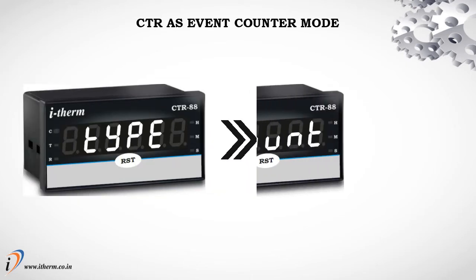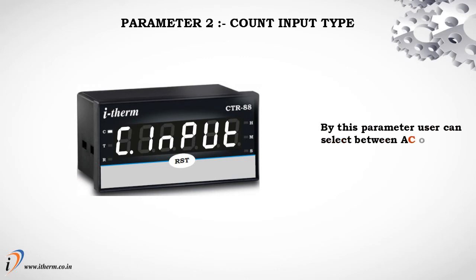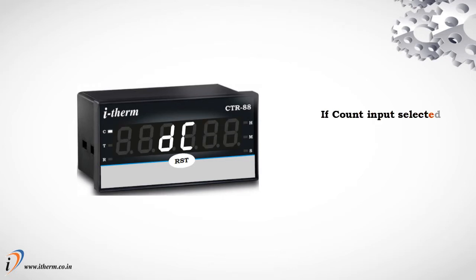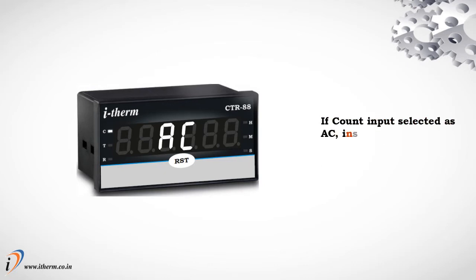CTR as event counter mode. Parameter 2: count input type. By this parameter, the user can select between AC or DC as count input. If count input is selected as DC, the instrument will count pulses from a proximity sensor or by potential-free contact. If count input is selected as AC, the instrument will count pulses from a 230-volt AC supply.